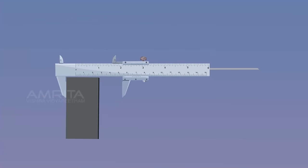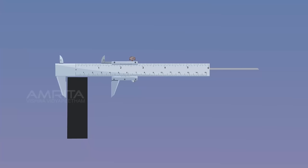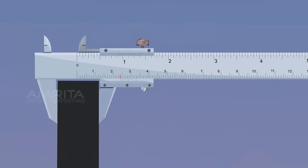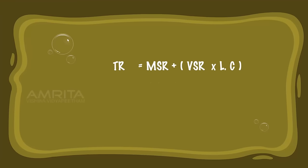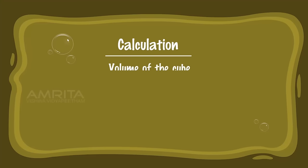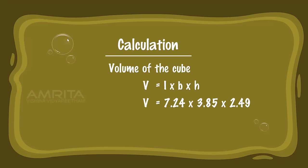Then place the rectangular block heightwise in between the outer measuring jaws of the vernier calipers and note the MSR and VSR readings. Calculation: TR = MSR + (VSR × least count) = 2.4 + (9 × 0.01) = 2.49 cm, so H = 2.49 cm. Volume of the rectangular block: V = L × B × H = 7.24 × 3.85 × 2.49 = 69.40626 cm³.